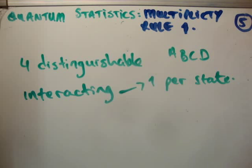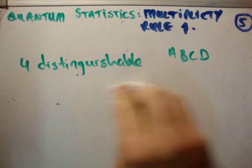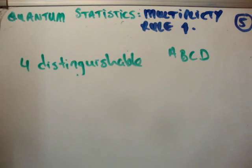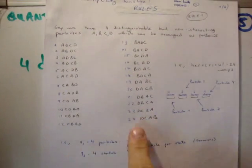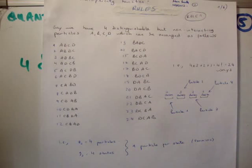So how many different ways can I arrange these four particles? The reason I wrote that they are interacting is that I only want to have one particle per state. So how many different ways can I arrange A, B, C, and D? Well, it's pretty straightforward. I'm going to show you, you can just write out a table, as I've done here.